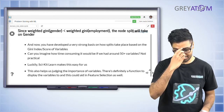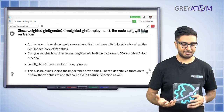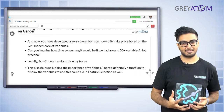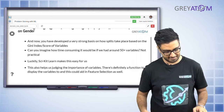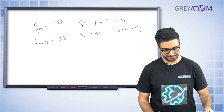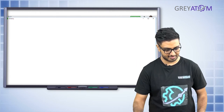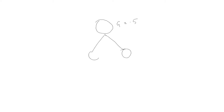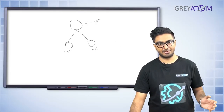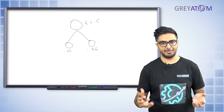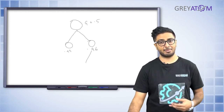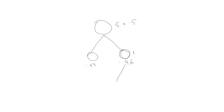Since the weighted Gini on gender is less than the weighted Gini of employment, the node split takes place based on gender. This gives a strong basis for how splits work using Gini index. To formalize the algorithm: we start with a root node with Gini ≈ 0.5 (50/50 split). After splitting on gender, one child has Gini 0.49 and the other has 0.46. These are not close to zero yet, so we continue splitting.